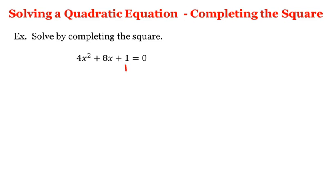The first thing we'll do is bring this constant term, namely the 1, to the right-hand side of the equation, which gives us 4x squared plus 8x equals negative 1.